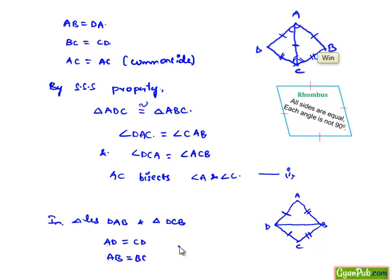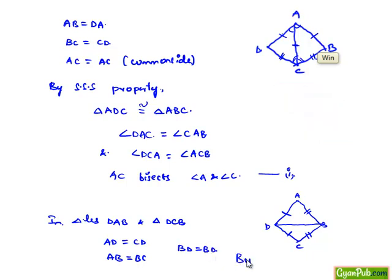Here BD is the common side for both triangles. So as three corresponding sides in both the triangles are equal by the SSS property, we can say triangle DAB is congruent to triangle DCB.